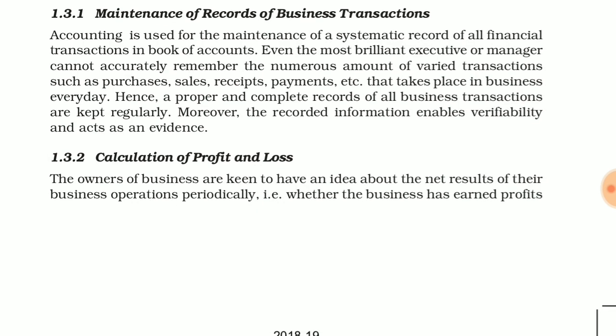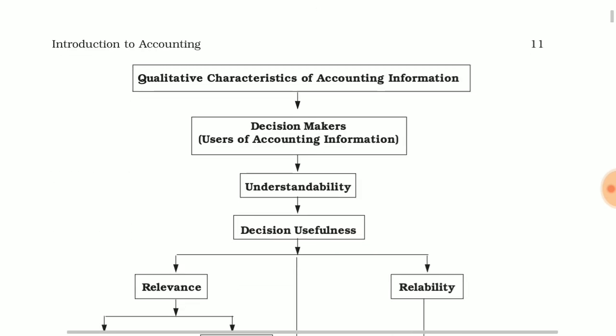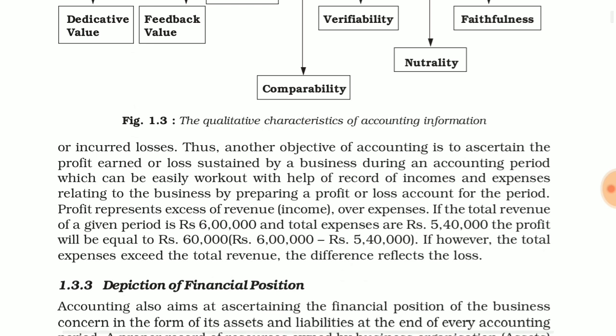The second point is calculation of profit and loss. If we are doing business, our motive is that there is profit in the business. So to find out the profit, you need to have an accounting process. The owners of the business are keen to have an idea about the net results of their business operations — that is, whether the business has earned profits or incurred losses.